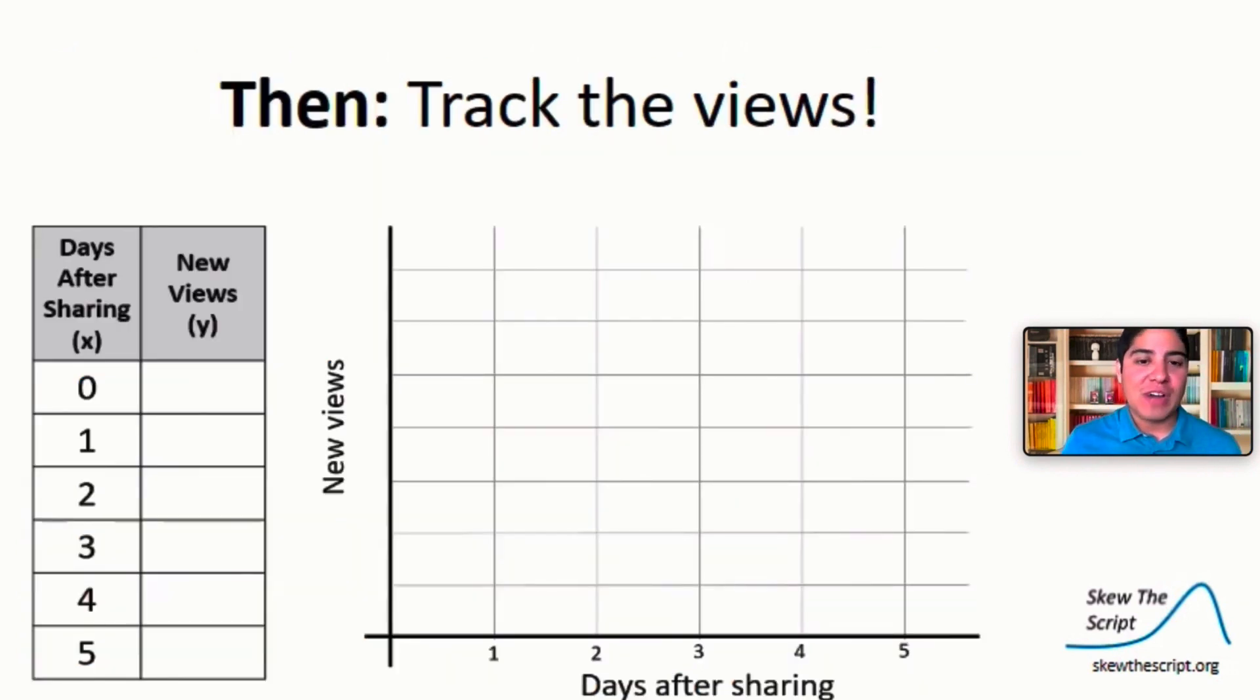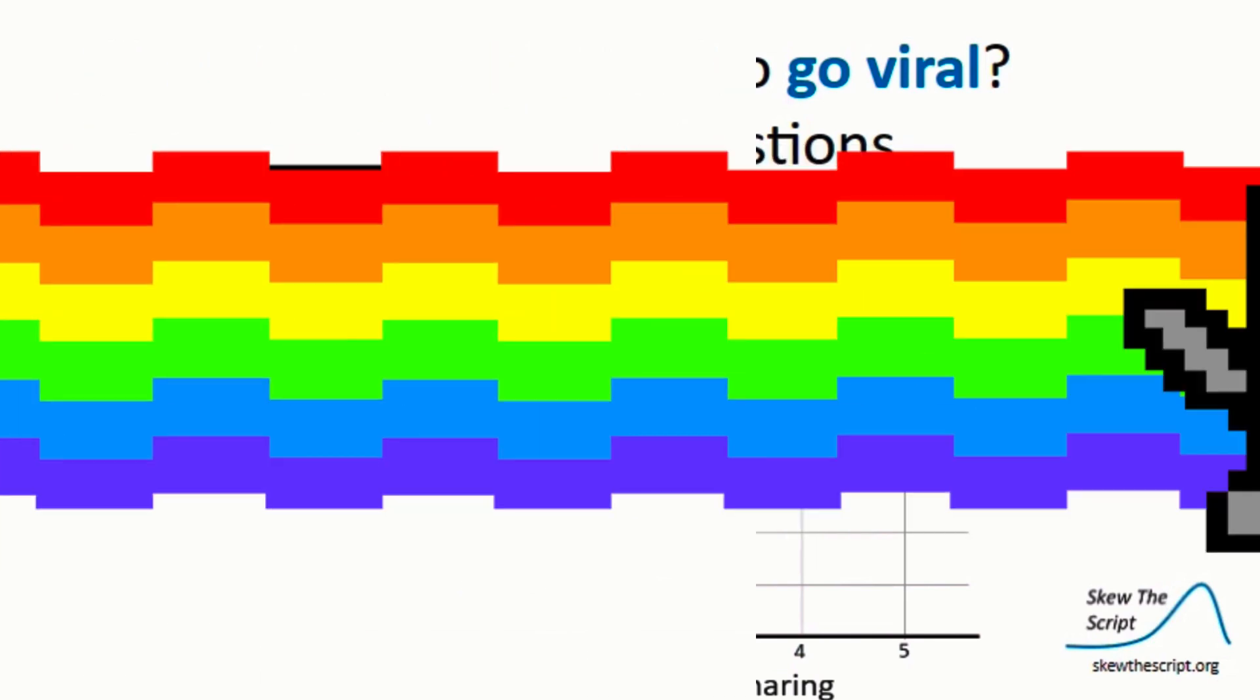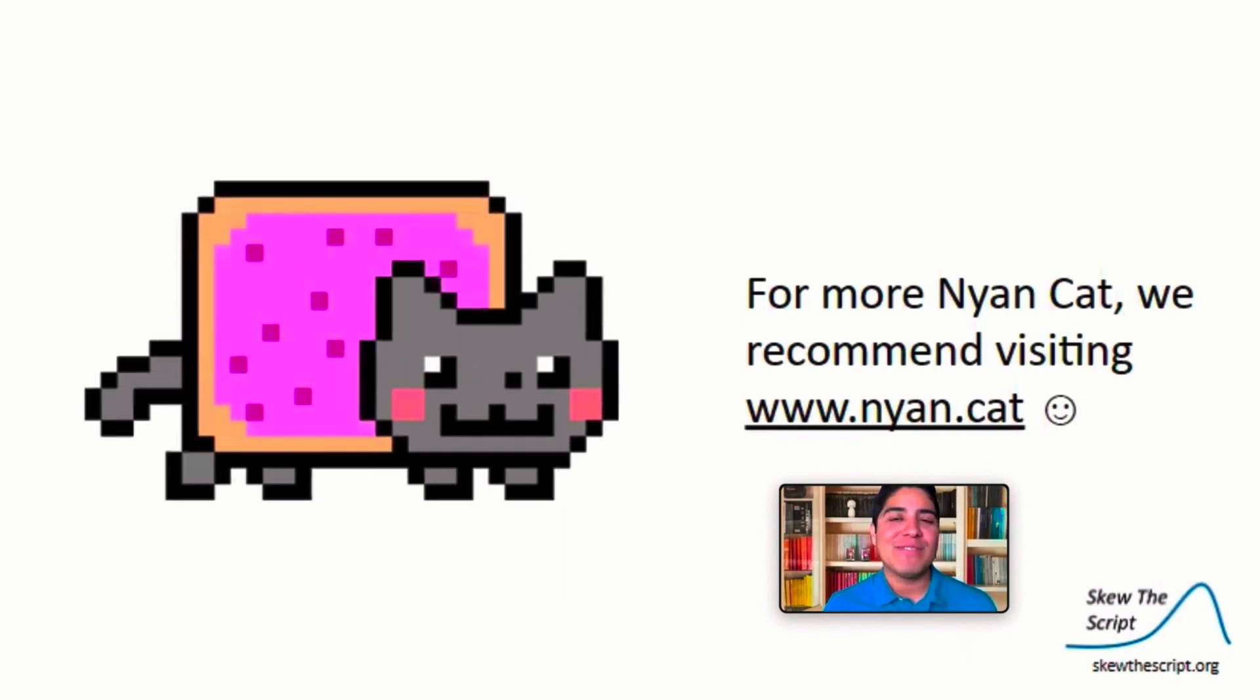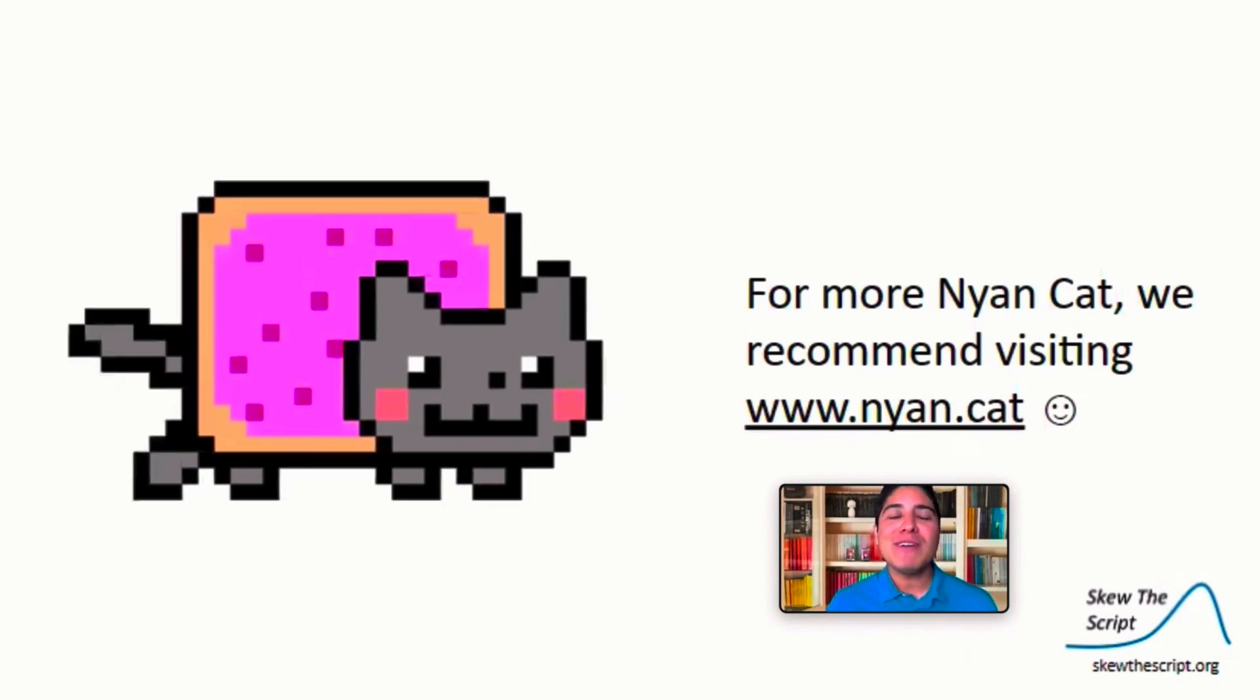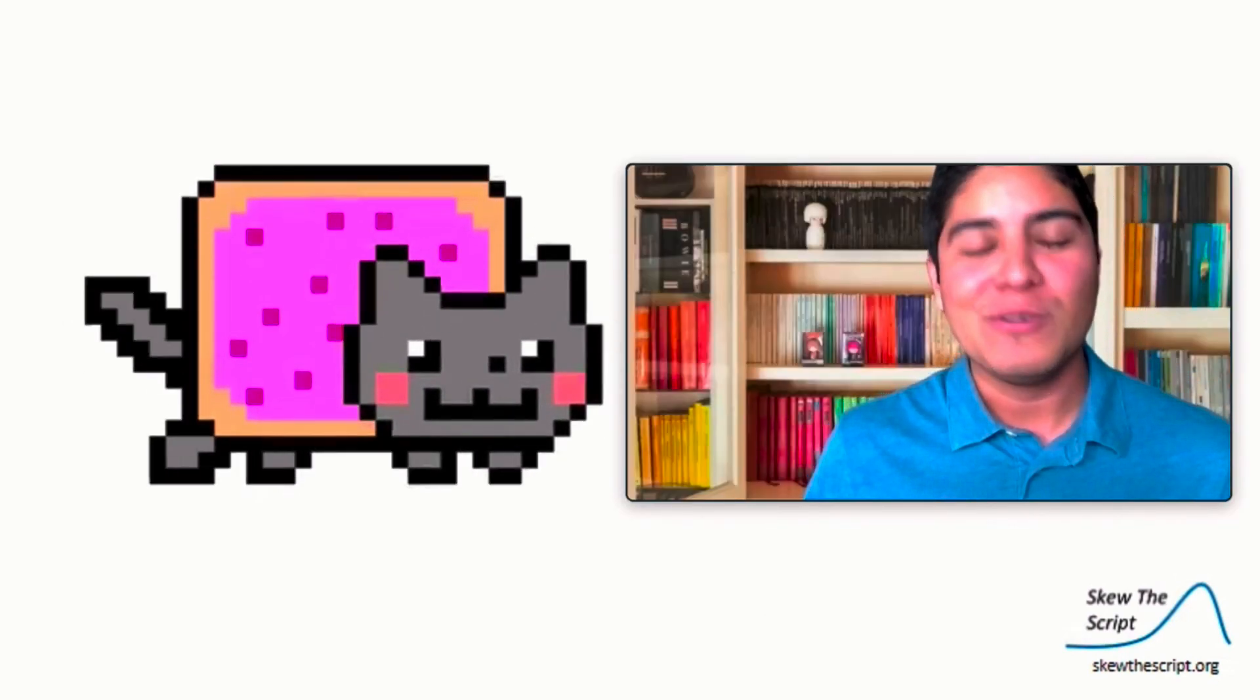You can use this graph on the last page of your guided notes to keep track of how your video is doing. After five days of sharing, you can see. Did your video go viral? And if not, don't feel bad, it probably just needs more cats. Definitely check out nyan.cat if you didn't get enough of that in this video. And remember to credit your wonderful math teacher if you ever have a video go viral. Thanks for following along on today's lesson. We'll see you next time.